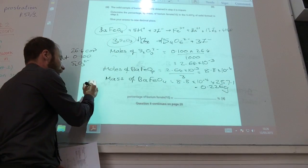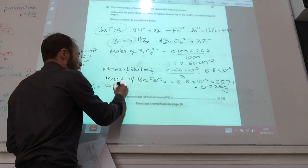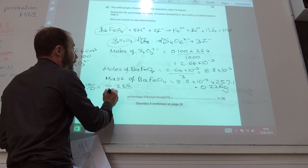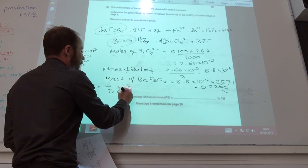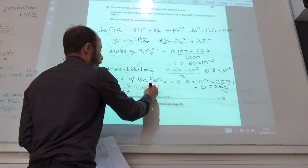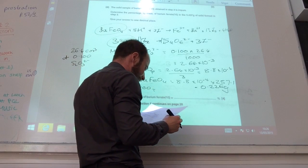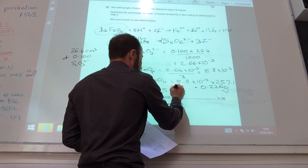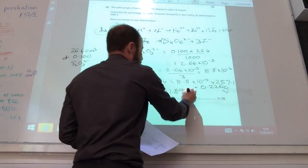And therefore my final percentage is 0.226 over the impure sample times 100. And that gives you 51.8%.